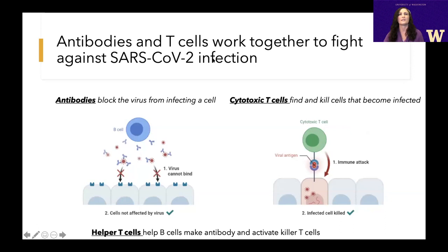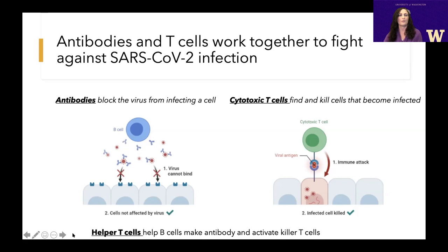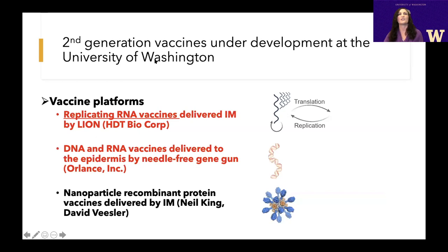Both antibody and T cell responses are needed to fight against SARS-CoV-2 infection. Antibodies can block a virus from infecting a cell. But there's also a cytotoxic T cell response — if your antibodies don't completely block all the virus from entering your cells, cytotoxic T cells are able to find and kill those infected cells, clearing the virus. Helper T cells are also important and are absolutely necessary to generate the memory response to induce both antibody and T cell responses.